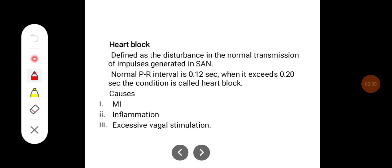It is defined as a disturbance in the normal transmission of impulses generated in SA node. The normal PR interval is 0.12 second. When it exceeds 0.2 seconds then this condition is called as heart block.